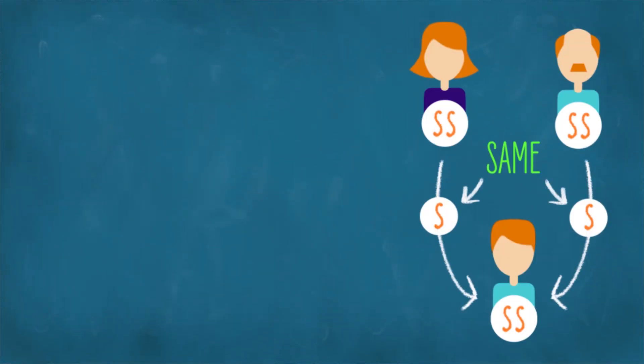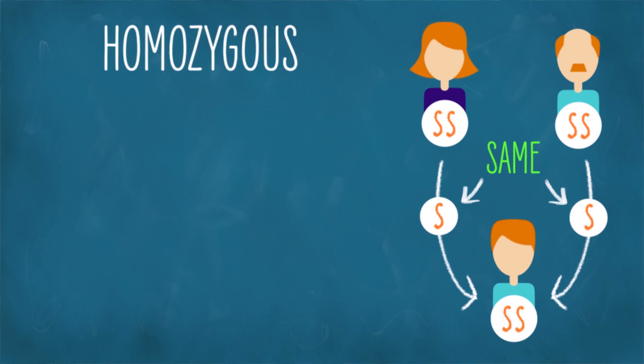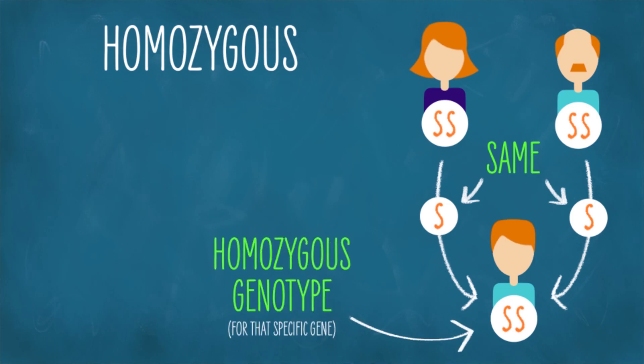Each of those chromosomes contains a large number of genes. And the reality is that there's no guarantee that the copy of the gene you got from your mom is exactly the same as the copy you got from your dad — they could be the same, but they could be different. If both copies are the same, then you are what is called homozygous for that gene — you have a homozygous genotype.